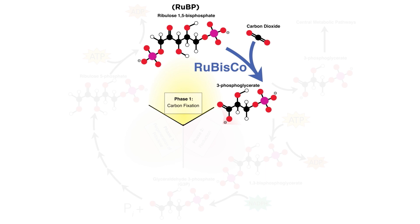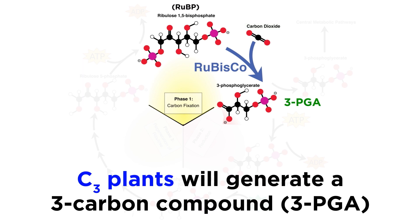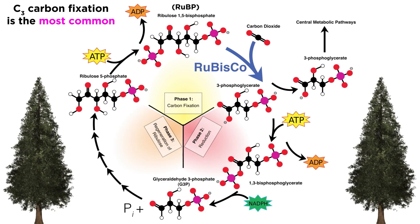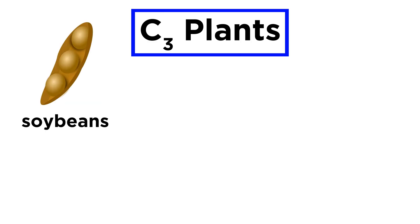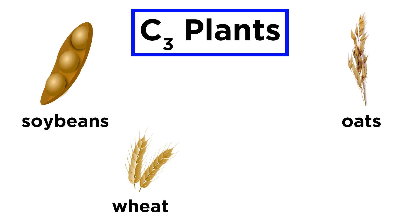In most plants, initial fixation of carbon occurs when the enzyme rubisco adds CO2 to RuBP. These plants are known as C3 plants because the first organic compound produced is the three-carbon compound 3PGA. C3 carbon fixation is the most common of the three pathways we will cover, so it is the method explained in detail in the photosynthesis tutorial. The plants that utilize this process include soybeans, oats, wheat, and rice.